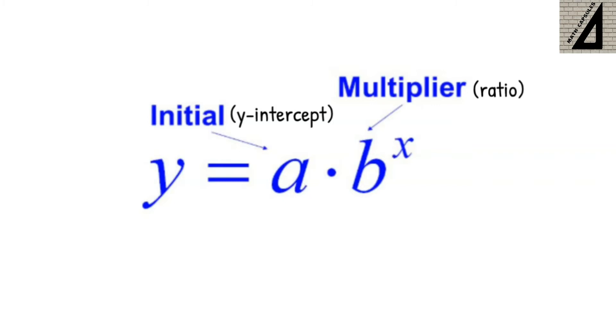Here is the form of the exponential function where a is the initial value or the y-intercept, while b is the multiplier or the ratio and is raised to the factor x.